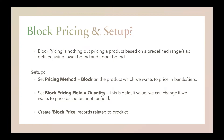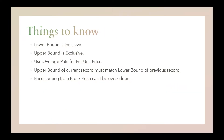Then we have to create several records of block pricing based on our need. There are five things we should know while setting up block pricing: first, lower bound is always inclusive; upper bound is always exclusive; whenever we want to use a per-unit price we have to set overage rates; the upper bound of the current record must match the lower bound of the next record; and the price coming from the block price cannot be overwritten via any price rule or any other mechanism.